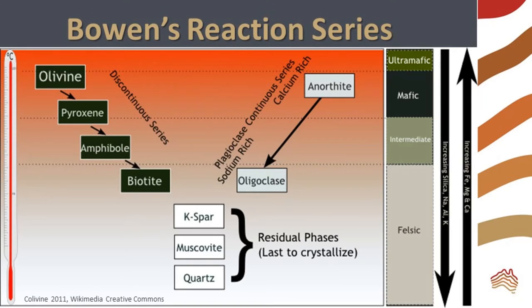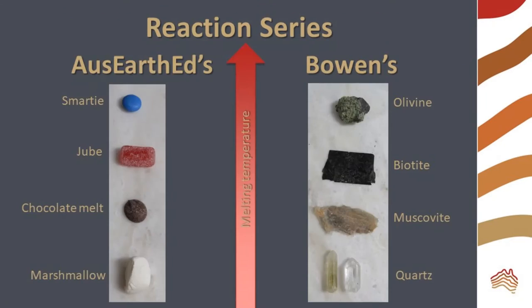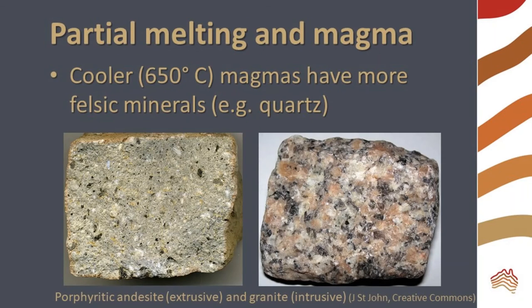We can arrange our model minerals in a Reaction Series by increasing melting temperature, just like the rocks in Bowen's series. Partial melting of minerals produces different types of magma based on temperature.